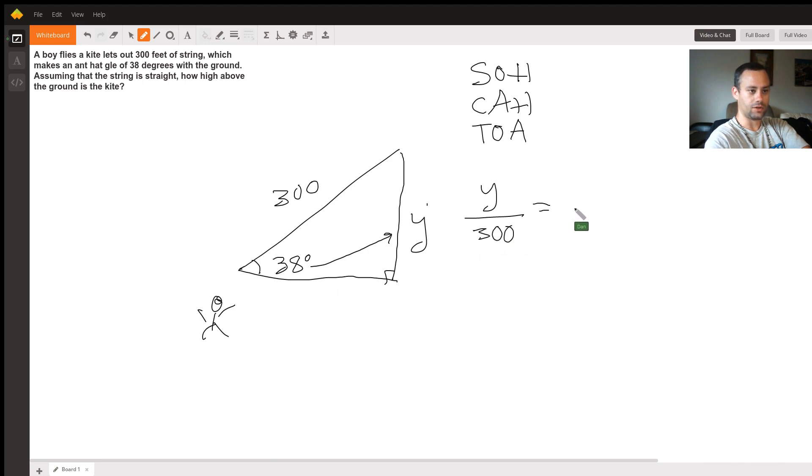The sine of 38 degrees is a constant. We can solve for y. Y equals 300 times sine of 38 degrees. I'll move this into one block. Now in my calculator, I will do sine of 38 first.